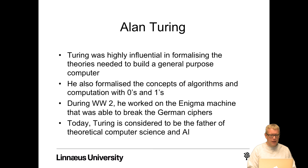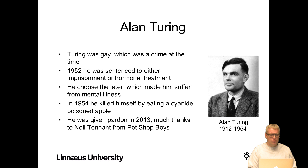Alan Turing was highly influential in formalizing the theories needed to build a general purpose computer. He also formalized the concepts of algorithms and computation with zeros and ones, which all our computers today are designed around. During World War II he worked on the Enigma machine, cracking German ciphers. Today, Turing is considered the father of theoretical computer science and artificial intelligence.